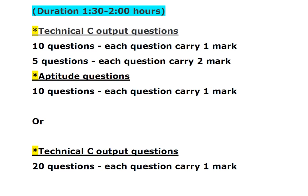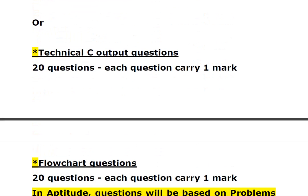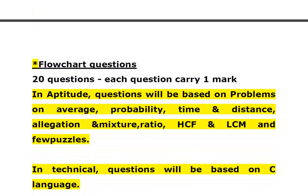The first round pattern may alternatively be technical C and flowchart questions, where technical C output questions will have 20 questions carrying 1 mark each, and flowchart questions will also have 20 questions carrying 1 mark each. For aptitude, normal questions will be asked which include average, probability, time and distance, ratio, mixture, HCF, LCM, and a few puzzles.